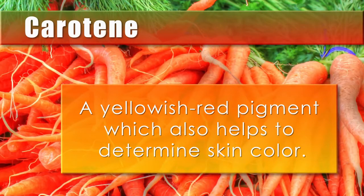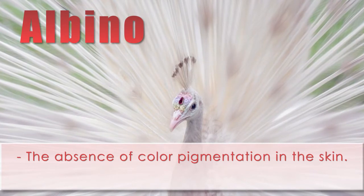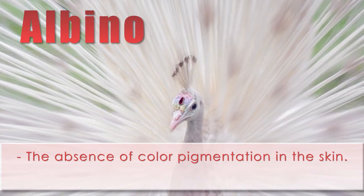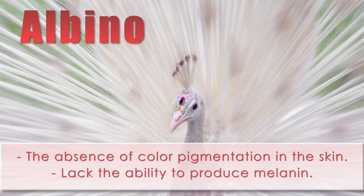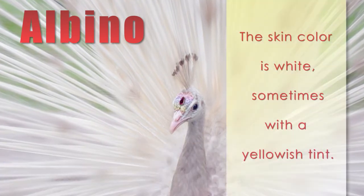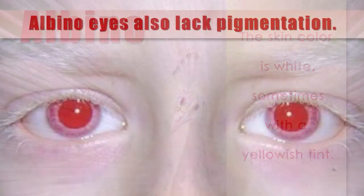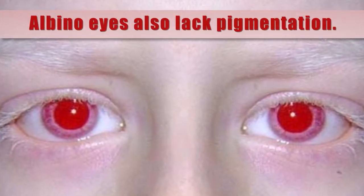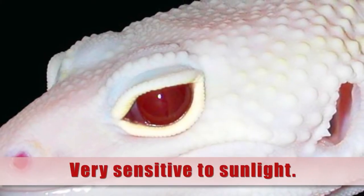Carotene is a yellowish red pigment which also helps to determine skin color. Albino is the absence of color pigmentation in the skin. Individuals born with this genetic inheritance lack the ability to produce melanin. The skin color is white, sometimes with a yellowish tint. Their eyes also lack pigmentation, which makes them dark pink or red, and very sensitive to sunlight.